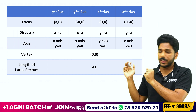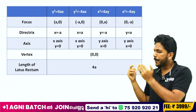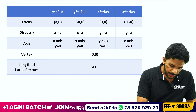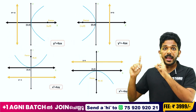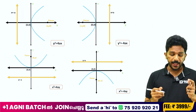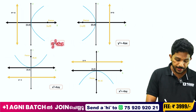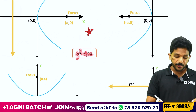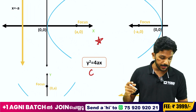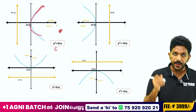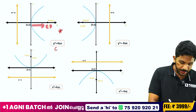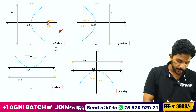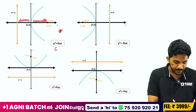You will learn 4 types of parabolas. You can memorize this table by heart. The four types of shapes are: y² = 4ax is the standard C-shape equation. The axis of symmetry is the x-axis. You can see the focus and directrix in the column of this table.